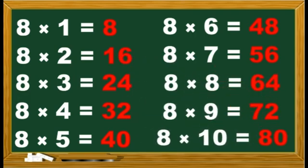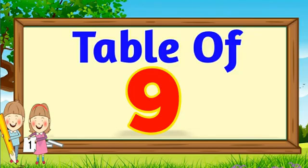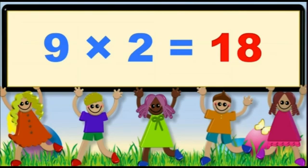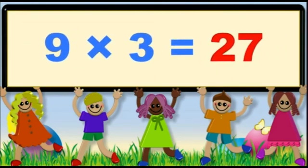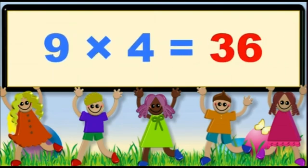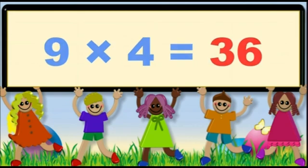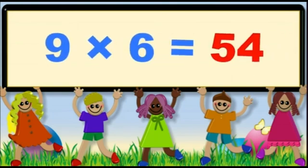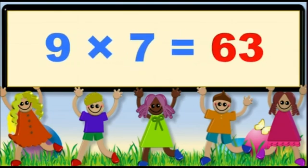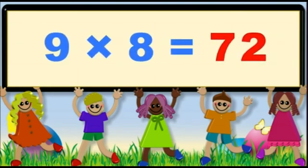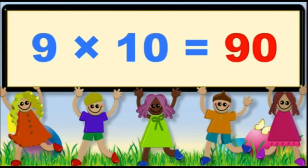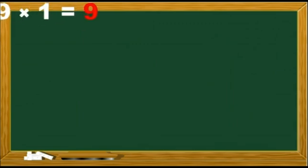8 10s are 80. Well done children! Table of 9. 9 1s are 9. 9 2s are 18. 9 3s are 27. 9 4s are 36. 9 5s are 45. 9 6s are 54. 9 7s are 63. 9 8s are 72. 9 9s are 81. 9 10s are 90. Let's do it one more time. 9 1s are 9.